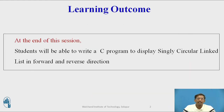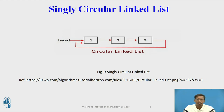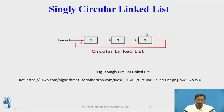Learning outcome: at the end of this session, students will be able to write a C program to display a singly circular linked list in forward as well as in reverse direction. This is a singly circular linked list where the list contains some nodes and the last node's next part will always hold the address of head or start, which makes it circular.